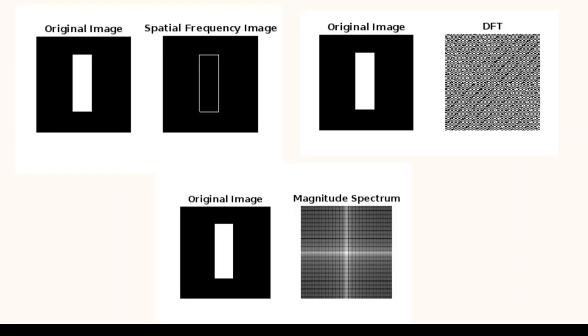Hello everyone. Today I will explain how the Fourier transform decomposes an image into its frequency components. When the Fourier transform decomposes an image into its frequency components, it reveals the contribution of different spatial frequencies in an image.